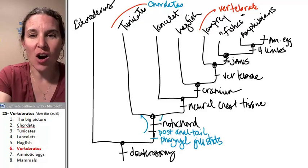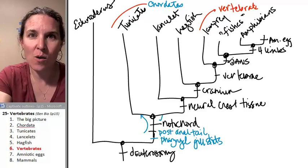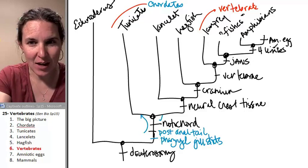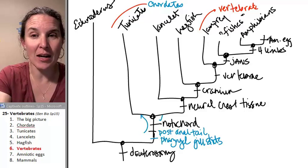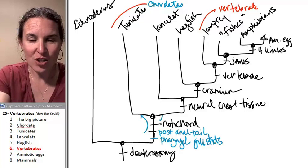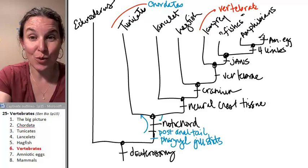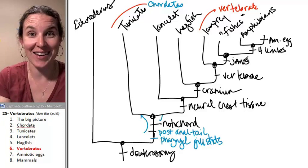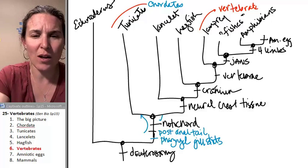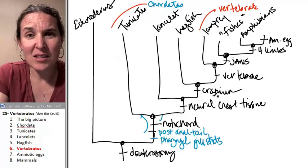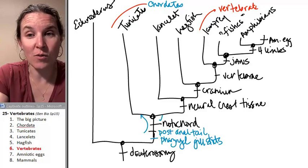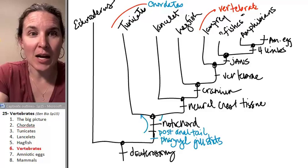Did you know everything with jaws are called gnathostomes and everything with four limbs are called tetrapods and everything with amniotic eggs are called amniotes. So we can actually define these groups based on the characteristics that their ancestors had which is really kind of cool. I mean, does anybody else think this is cool? Please tell me if you do and don't tell me if you don't. All right. Let's talk about the amniotic egg. I'll see you next time.